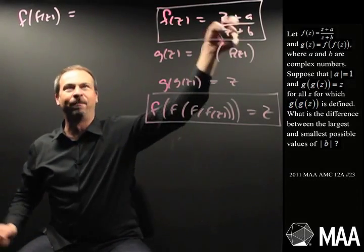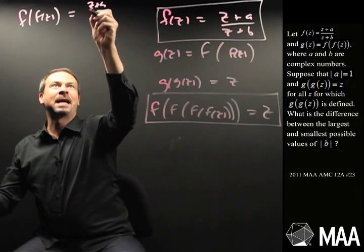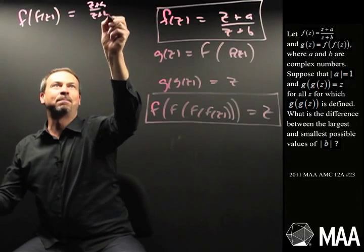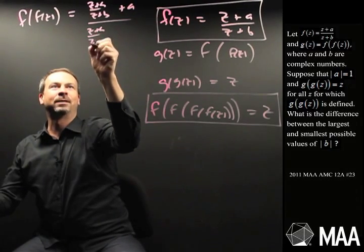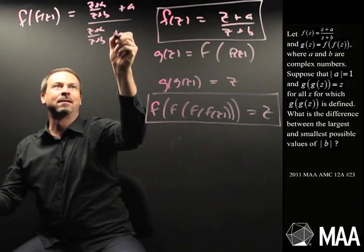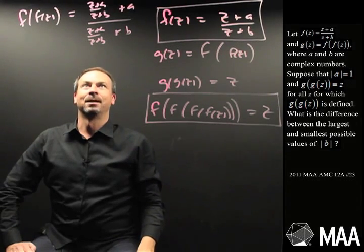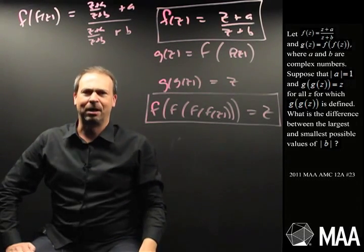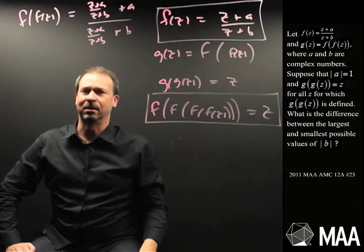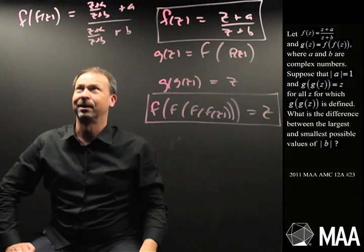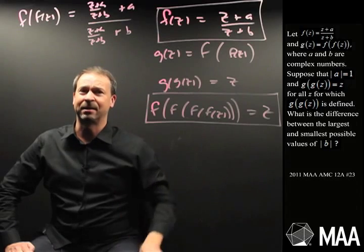Wherever I see a z, put that whole formula in. So f of f of z is: z plus a over z plus b plus a, all over z plus a over z plus b plus b. Well that looks charming, doesn't it? I don't think I want to do f of f of f of z — it's going to be horrible.